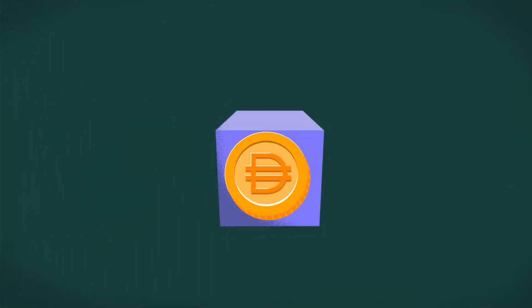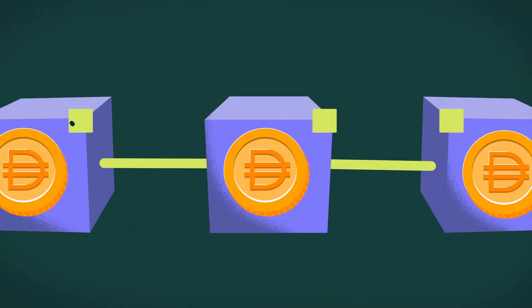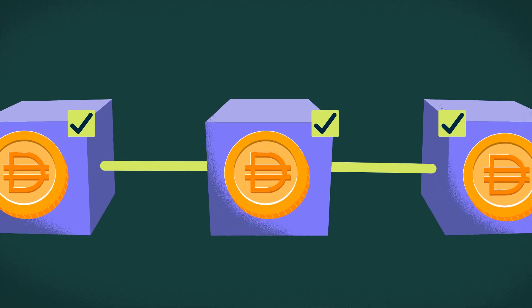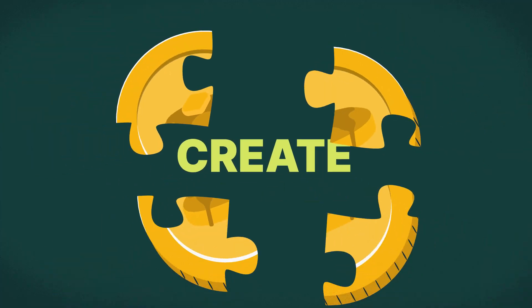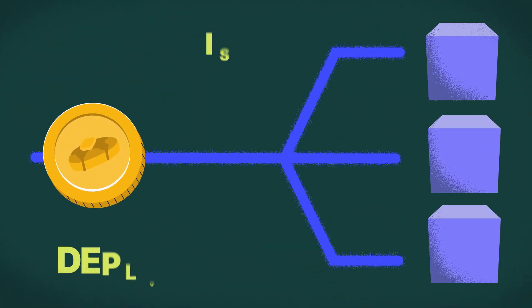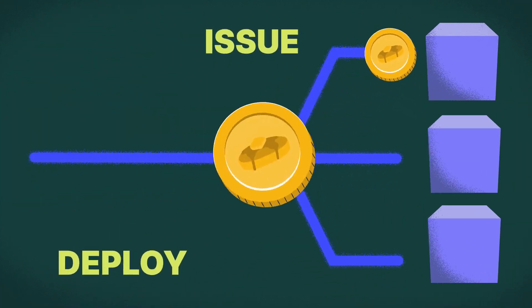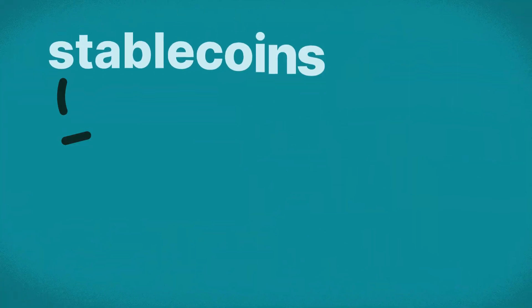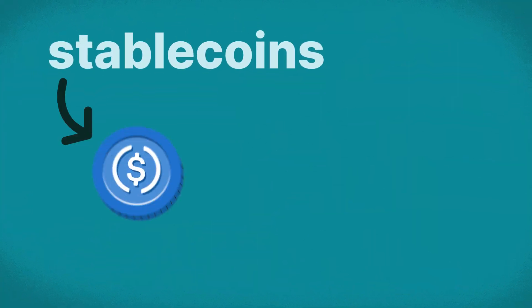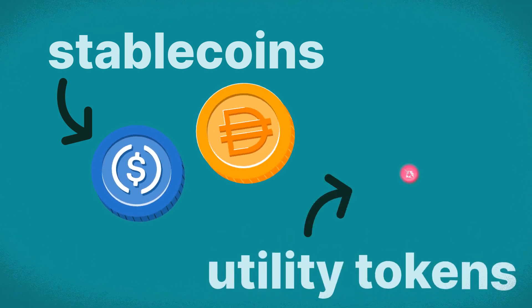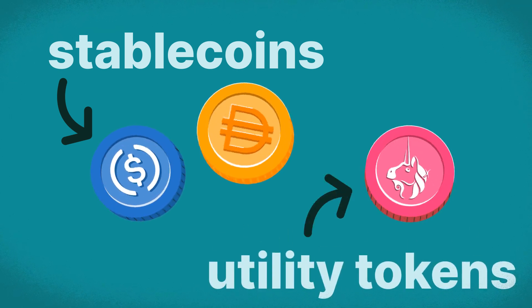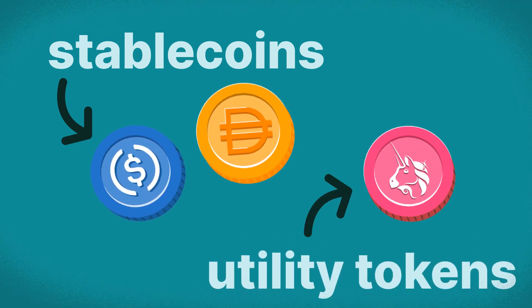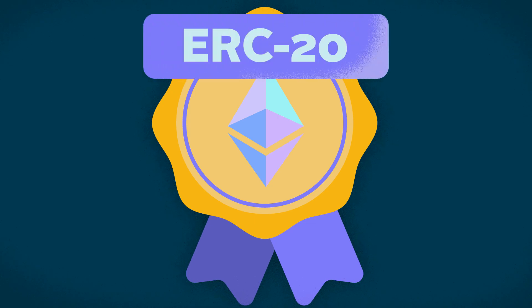Similarly, each token on every blockchain adheres to certain standards. They tell people how to create, deploy, and issue new tokens on their underlying blockchain. For instance, stablecoins like USDC, DAI, or utility tokens like UNI, all adhere to the most popular token standard — ERC20.